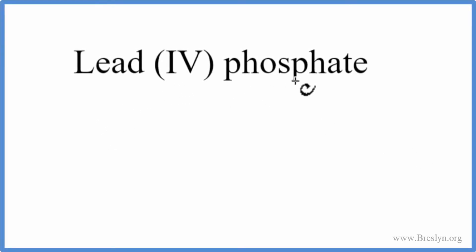To write the formula for lead four phosphate, we go to the periodic table, look up lead, that has an element symbol of Pb.